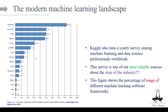Here's another figure supporting our approach — based on Kaggle's yearly survey among ML practitioners and data scientists, one of the most reliable sources for the state of the industry. It shows the percentage of usage of different ML software. scikit-learn is the most widely used package, then TensorFlow, Keras, XGBoost, PyTorch, LightGBM, and others. In this course, we cover almost all of them except PyTorch.